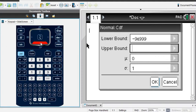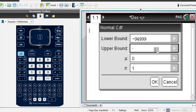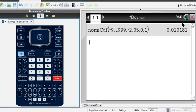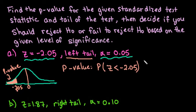Our lower bound is negative 9E999, which is really negative infinity—negative 9 with 999 zeros behind it. The upper bound would be the z-score we are given, negative 2.05. The mean is 0 and standard deviation 1 since we're dealing with a z-score. Anytime it's a z-score, we use 0 and 1. Our p-value is 0.0202 approximately.